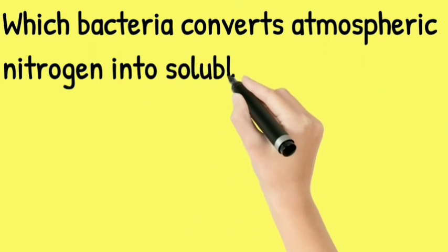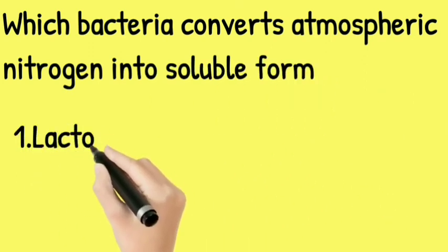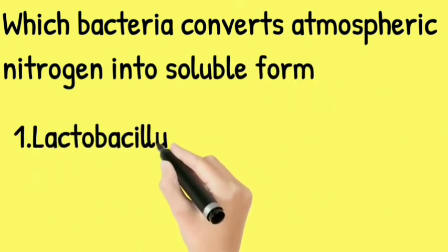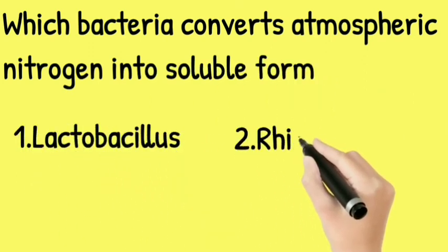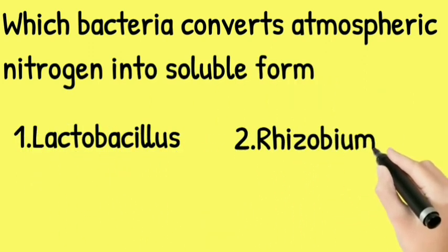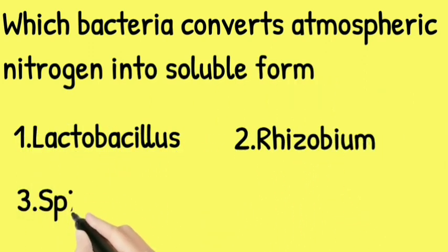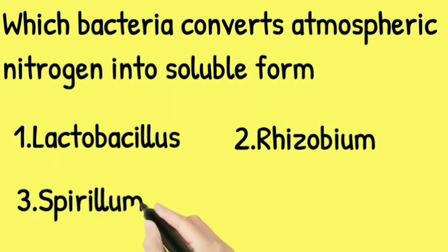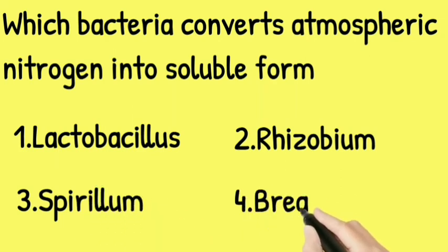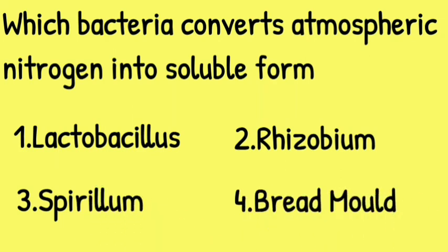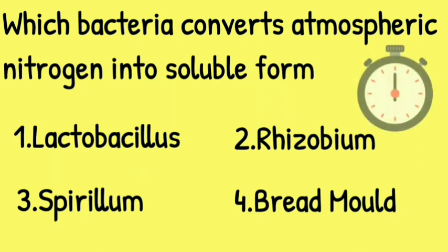Which bacteria converts atmospheric nitrogen into soluble form? The options are: Lactobacillus, Rhizobium, Spirulina, and Bread mold. Your time starts now!